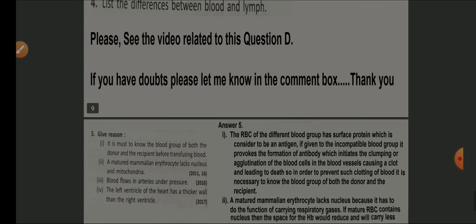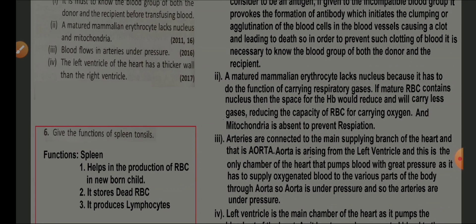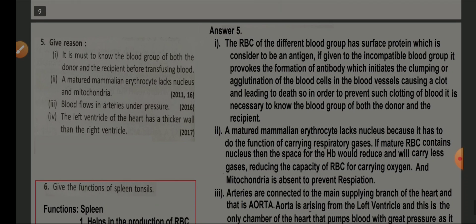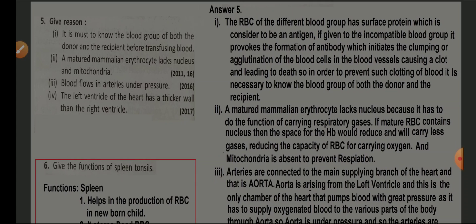Give reasons — number one: it is necessary to know the blood group of both donor and recipient before transfusing blood. RBCs of a different blood group have surface proteins considered antigens. If given to an incompatible blood group, it provokes antibody formation, initiating clumping or agglutination of blood cells in blood vessels, causing a clot and leading to death.